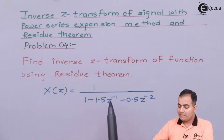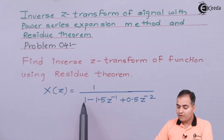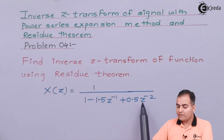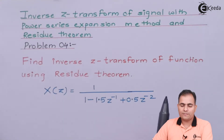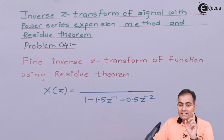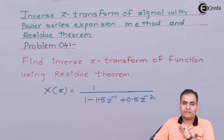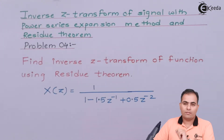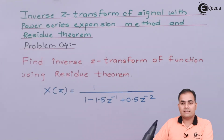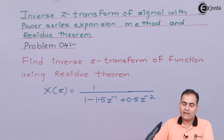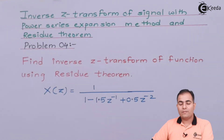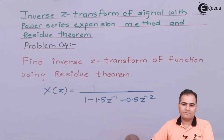The given function is X(Z) = 1 / (1 − 1.5·Z⁻¹ + 0.5·Z⁻²). This is similar to the partial fraction method, but we are going to multiply both sides by Z^(n−1) and then proceed.